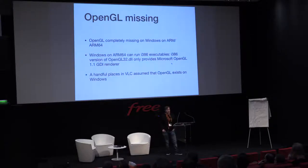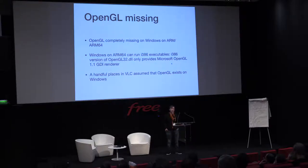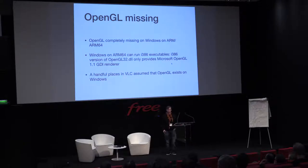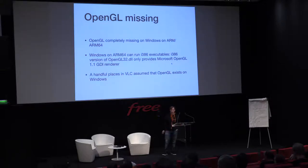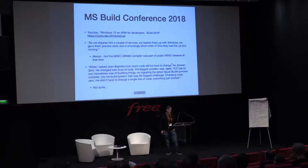Then another issue — the final one I noticed for the real device — is that OpenGL is missing. On Windows on ARM64, it can actually run 32-bit x86 binaries, and there you do have OpenGL in some way — it's like the 20-year-old software rasterizer, but it's still available. But for ARM and ARM64, it's not there. VLC assumed in a couple of places that if you have Windows you also have OpenGL. But not a big issue.